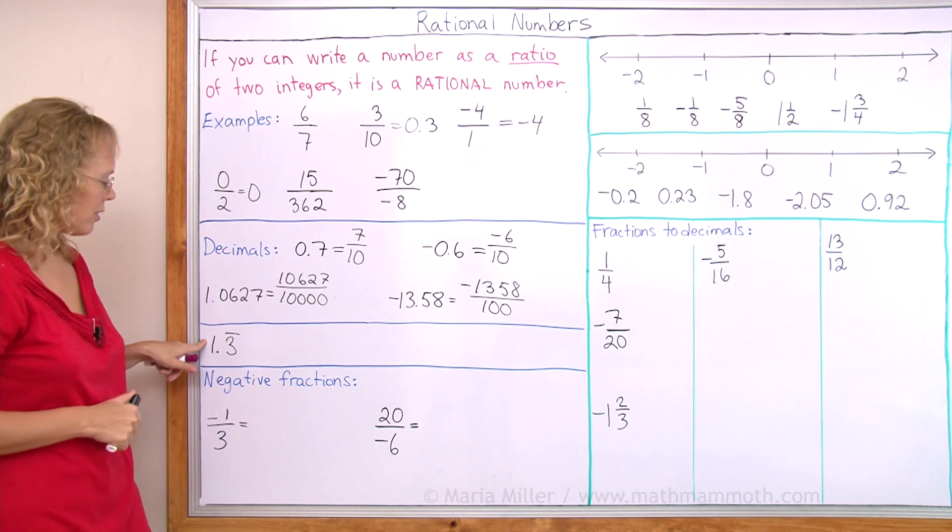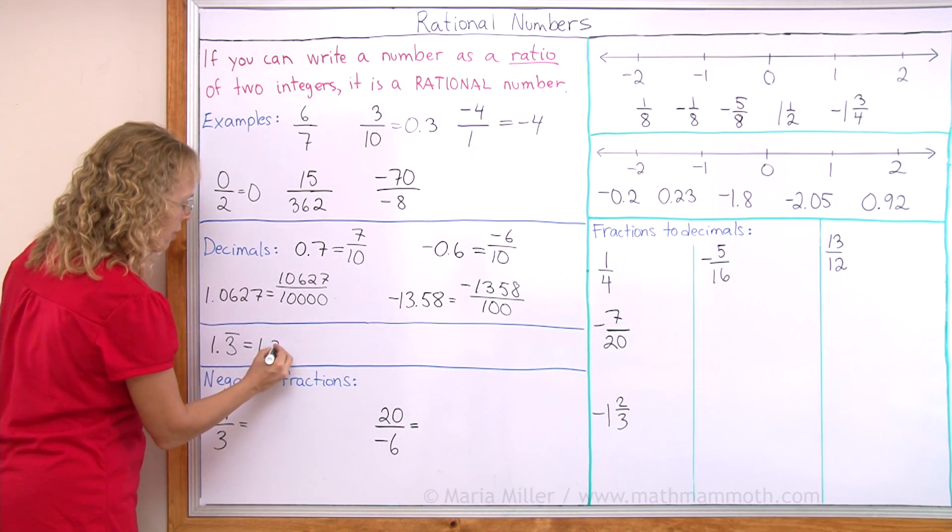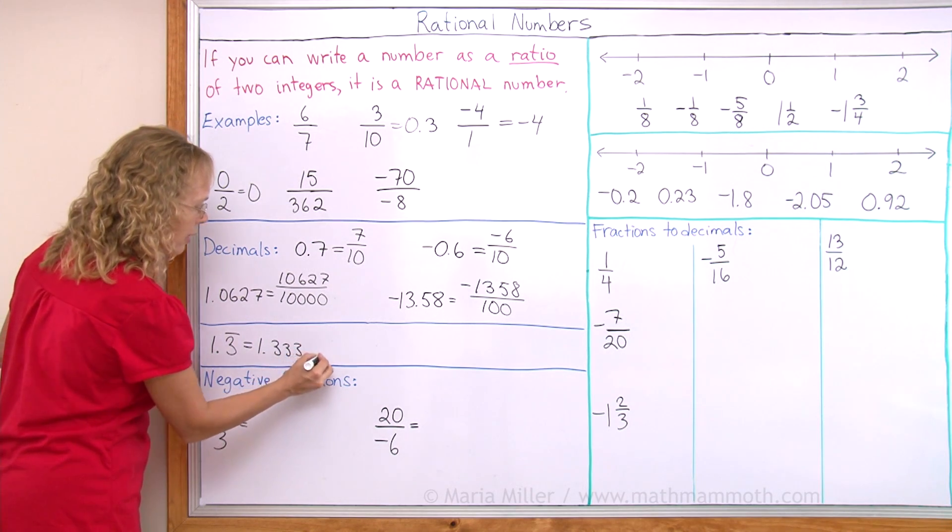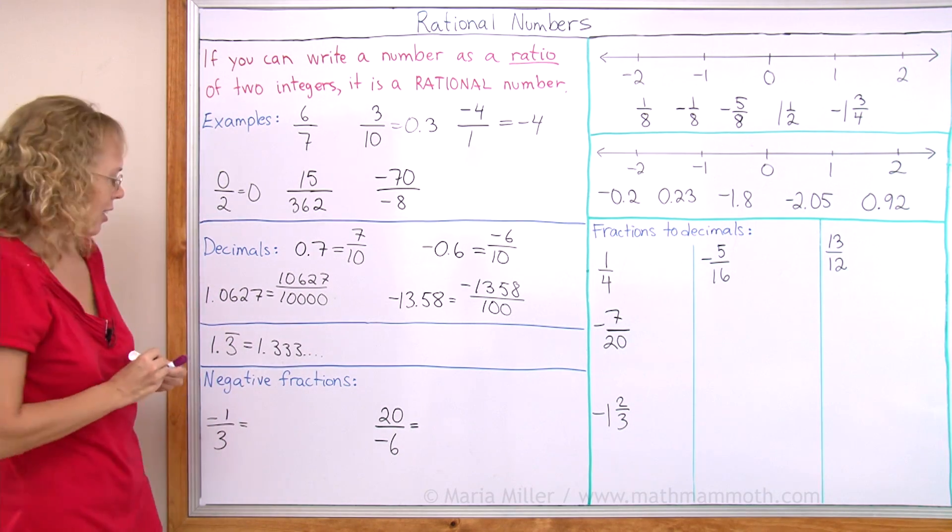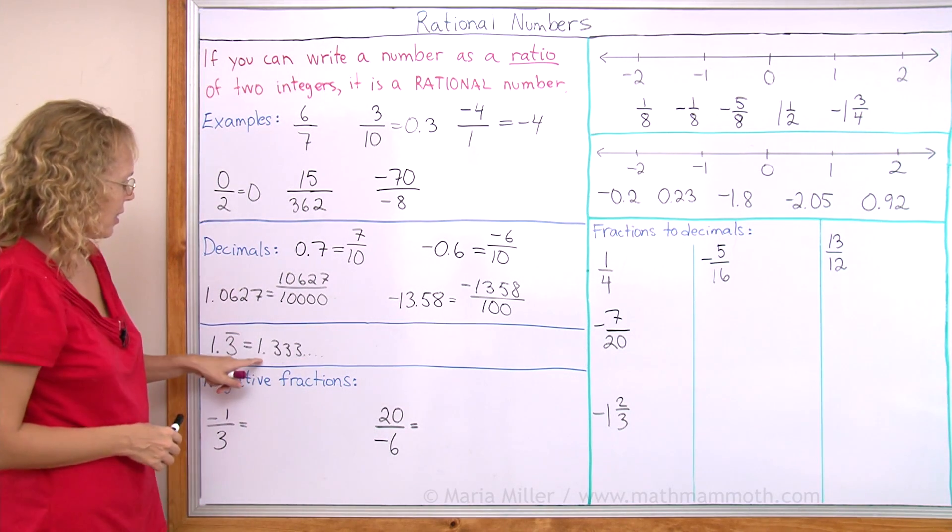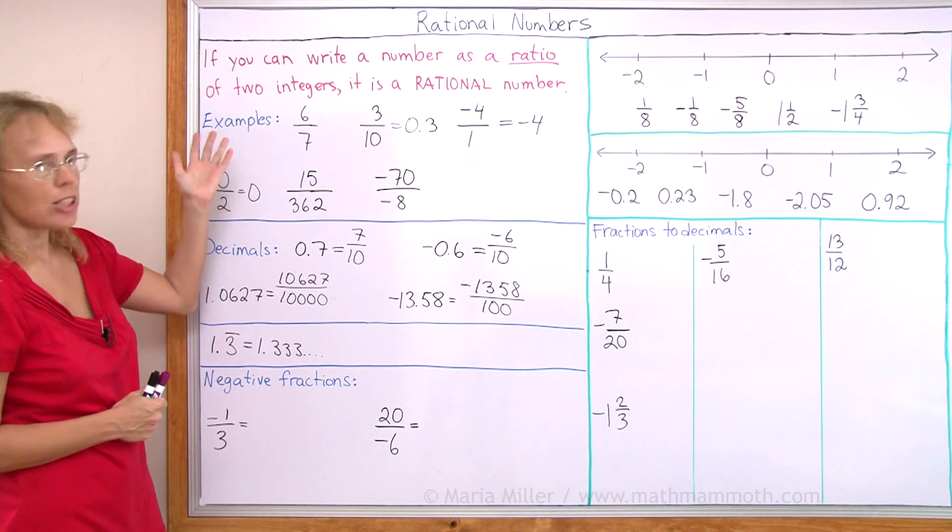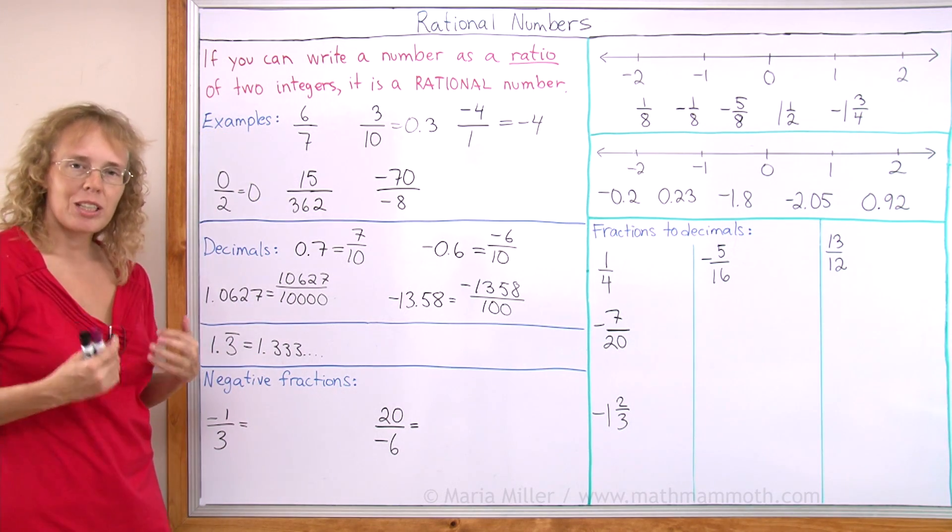This one here, if you remember what this means, the bar on top means it's a repeating decimal. It means the threes are repeating indefinitely. This decimal is a non-ending decimal. It repeats those threes. And is it a rational number? Can we write it as a ratio of two integers? That's a good question.